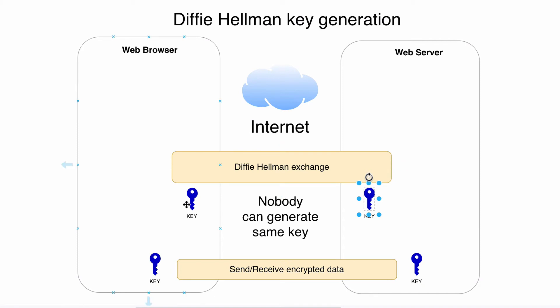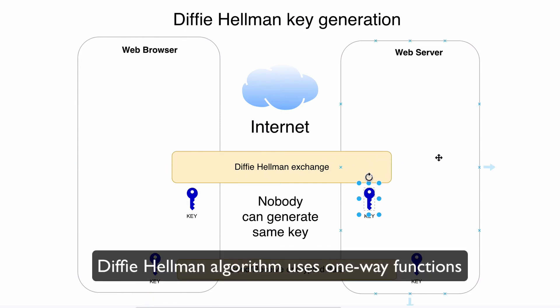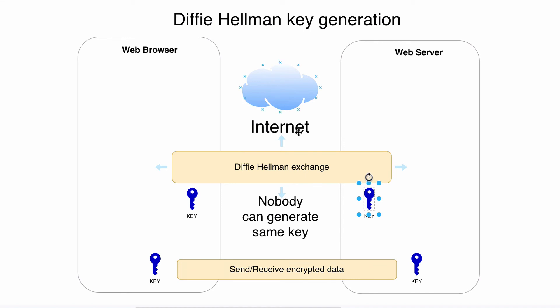You may ask how both sides can generate the same key but no one else can. The answer is that the Diffie-Hellman algorithm uses so-called one-way functions. In a one-way function, even if you know the result, you are not able to retrieve the parameters that were used inside the function. That's what makes this algorithm work.